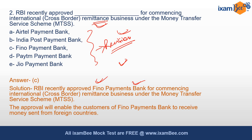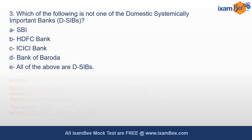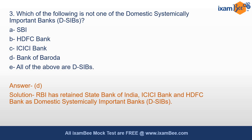The third question — very conceptual and very important: Which of the following is NOT one of the Domestic Systemically Important Banks, or D-SIBs? The answer here is Bank of Baroda. The Domestic Systemically Important Banks are: State Bank of India, ICICI Bank, and HDFC Bank.